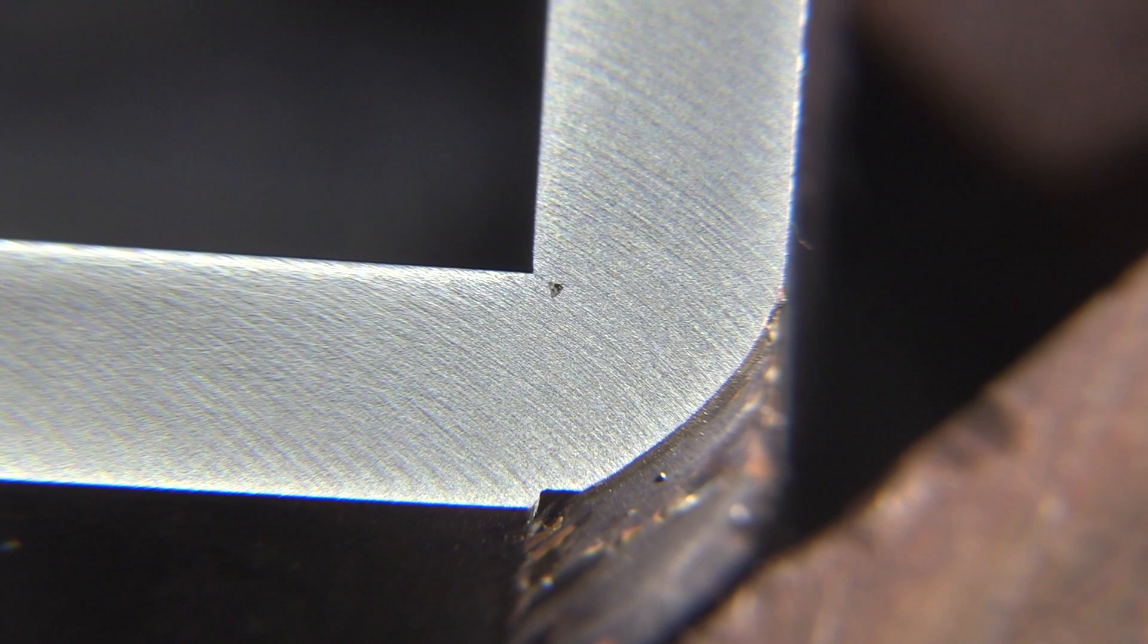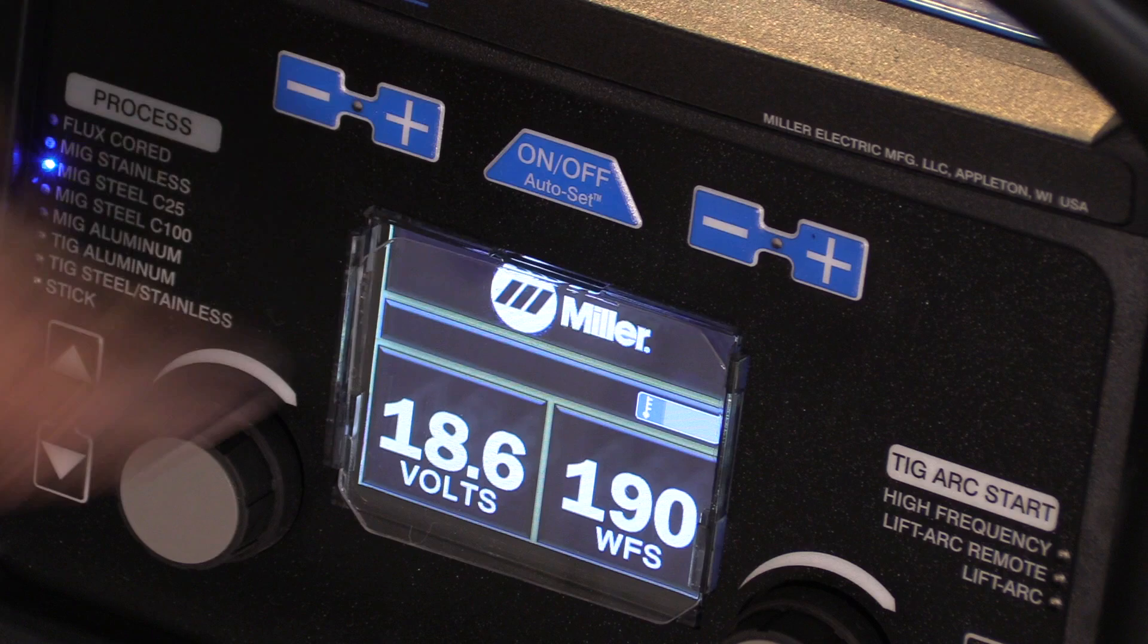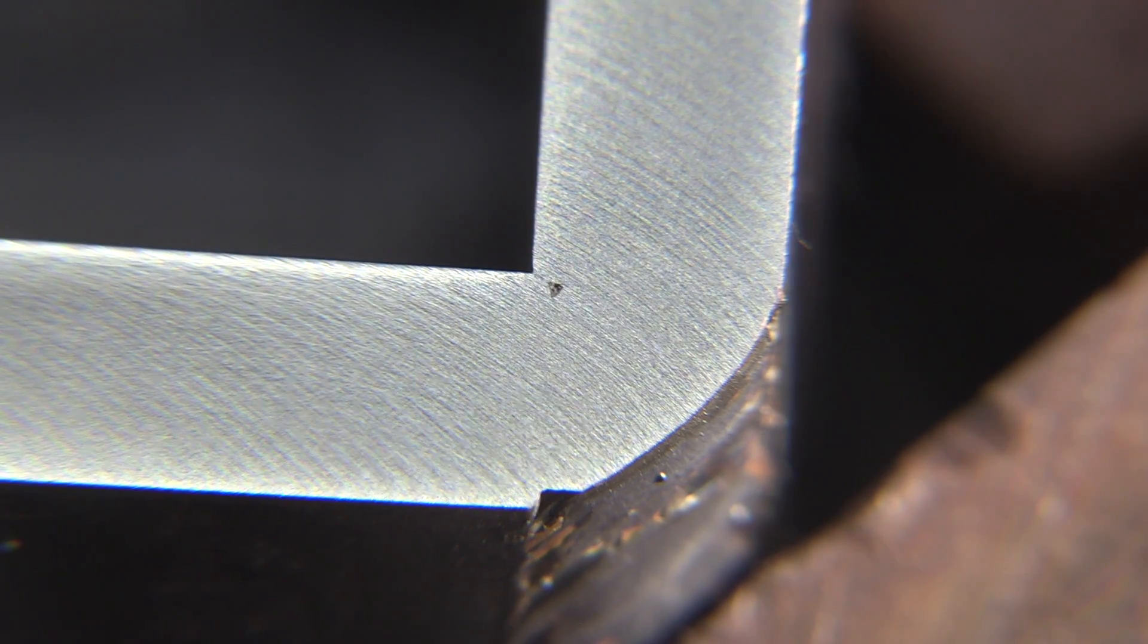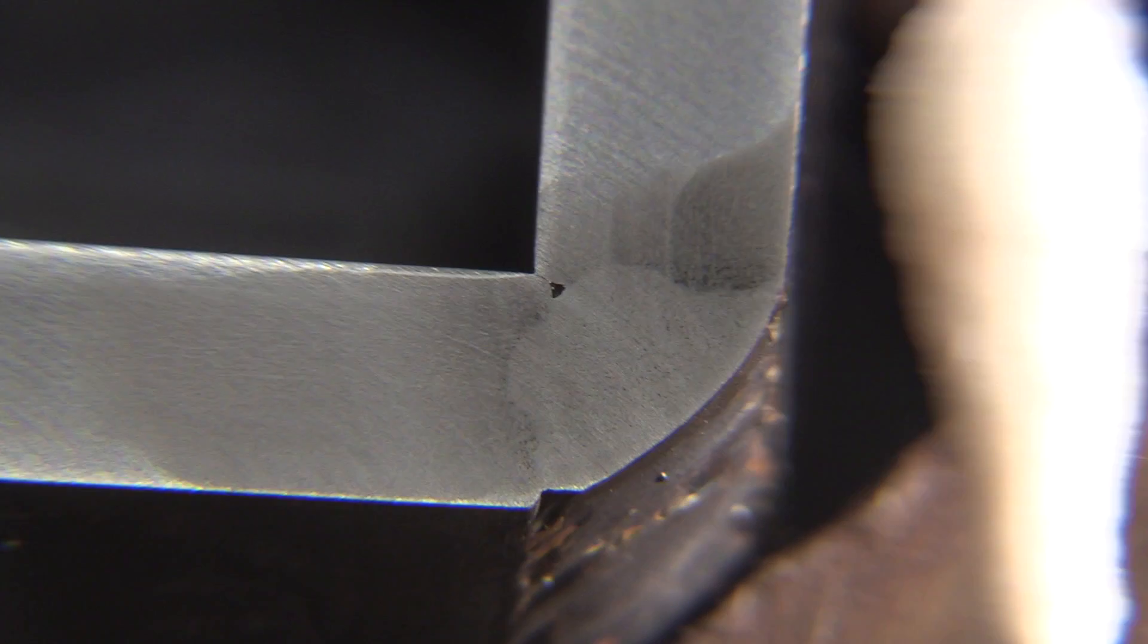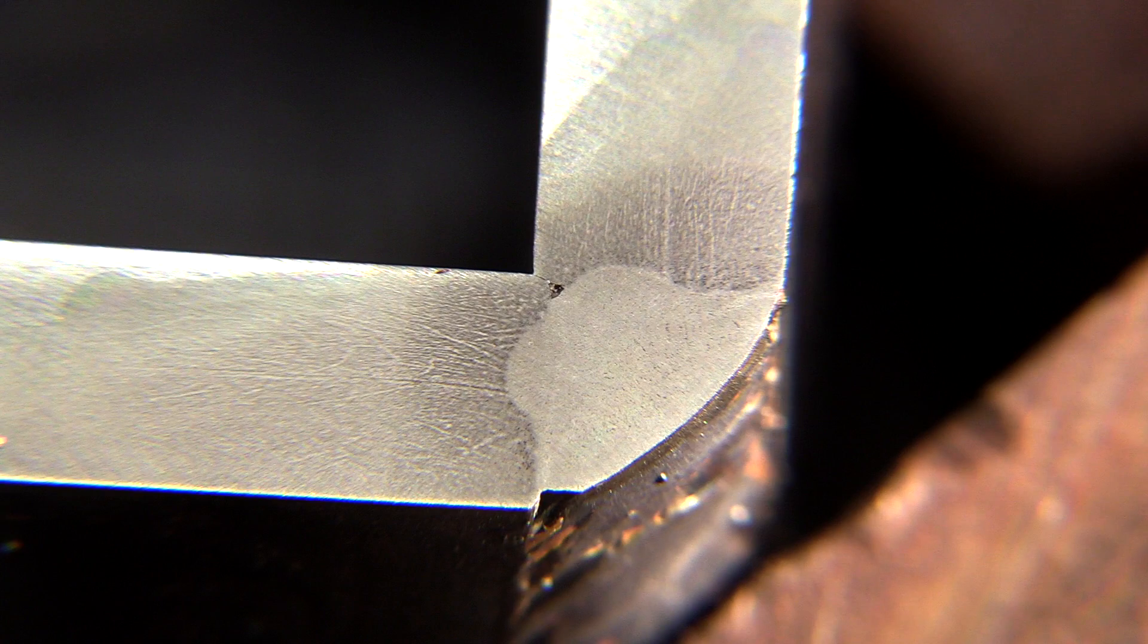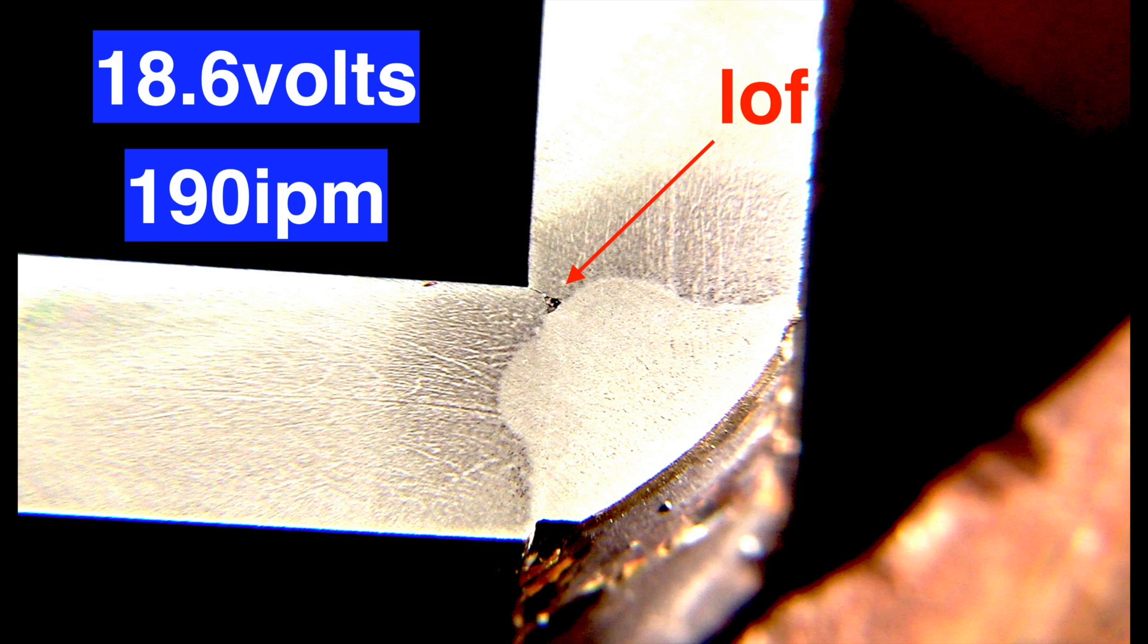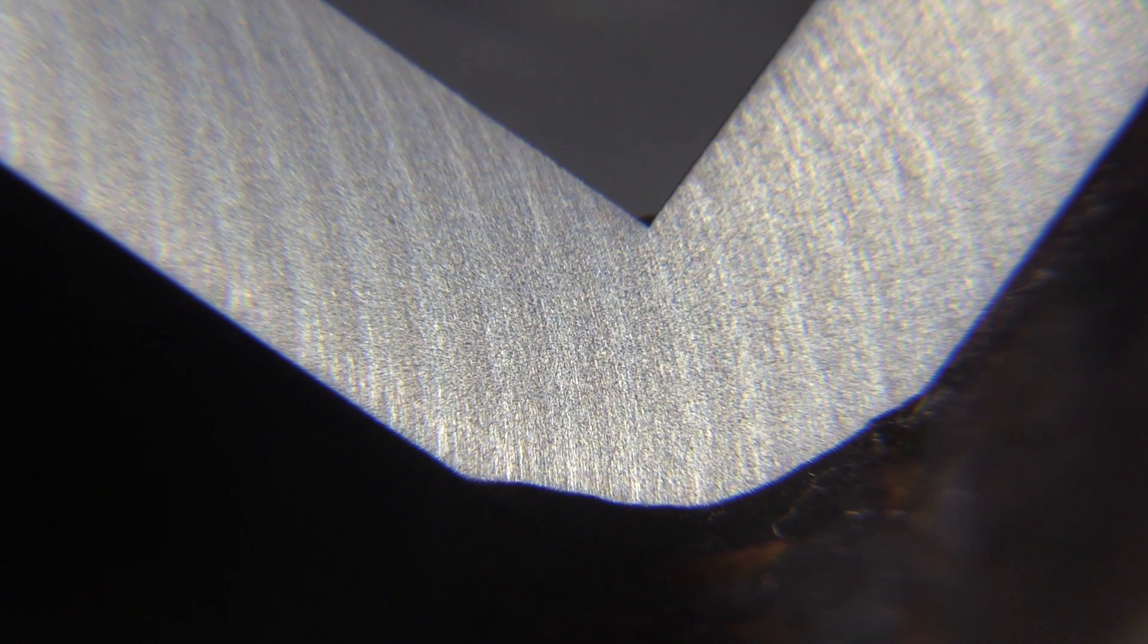Then we can see exactly how much penetration we got or didn't get. Again this is at 18.6 volts, 190 inches a minute, 035 wire. A swab etch will tell us exactly what we got here. You could already see a hint of lack of fusion there in the root of the joint but now we know exactly how much we got. You won't always see lack of fusion before you etch. That's why you etch.